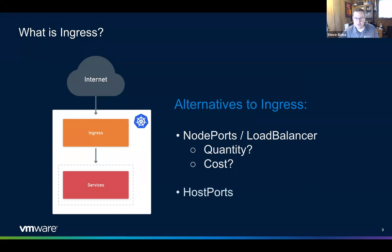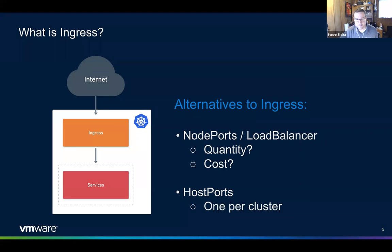Another option is host ports, which basically map a pod in your cluster to a host port on the node. But the problem is you can only have one per cluster — only one application can map port 80. So unless you're going to deploy one application per cluster, there's a lot of overhead. Ingress gets around all of this by only having a single entry point but being able to handle multiple applications and multiple paths into your cluster.